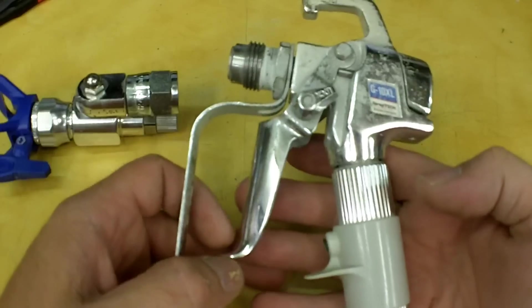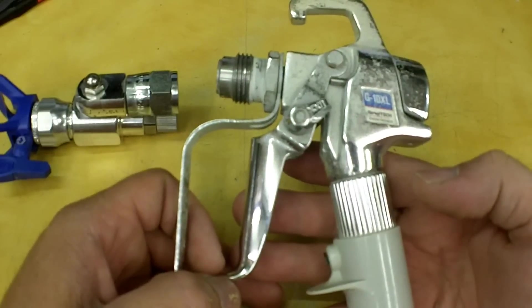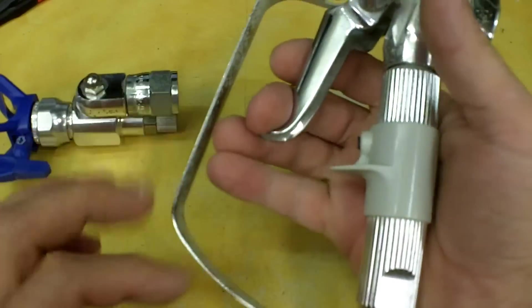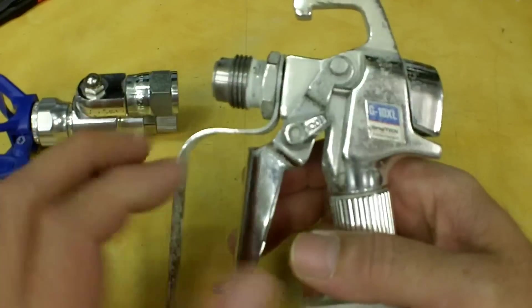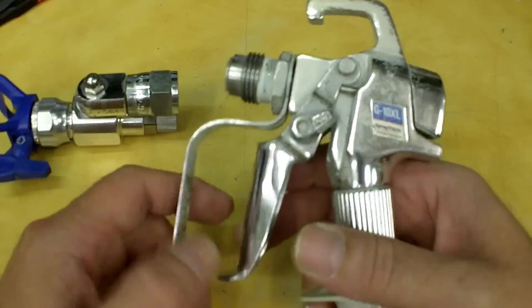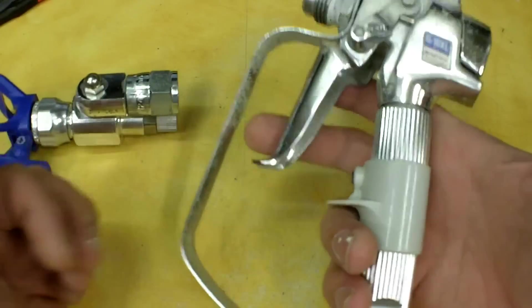I'm using a SprayTek G10XL two-finger trigger, which is what I prefer over a four. My gun that came with my Graco sprayer is still in the package because it's a full four. This is my go-to.